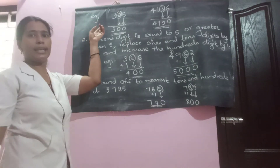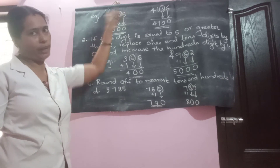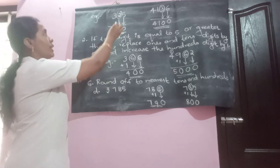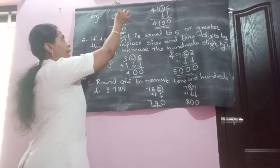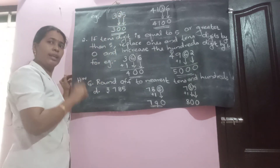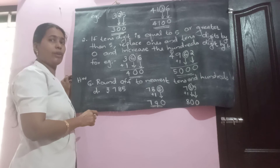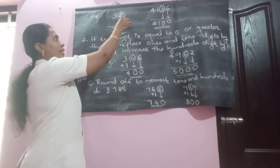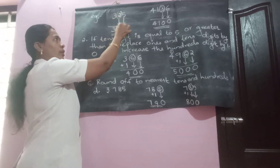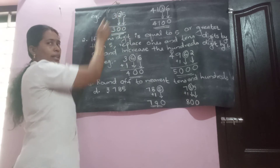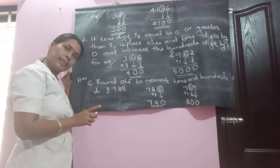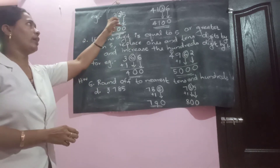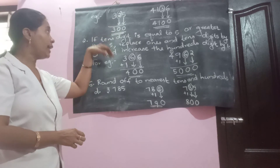For example, the number 325 — we are going to round off this to nearest hundreds. Circle the ten's digit. After circling, replace both the one's digit and ten's digit by zeroes. So instead of five, write zero; instead of two, write zero. Then think about the circled one: is it less than five? Yes, it is less than five, so there is no change to three. So 325 has been rounded down to 300, to nearest hundreds.